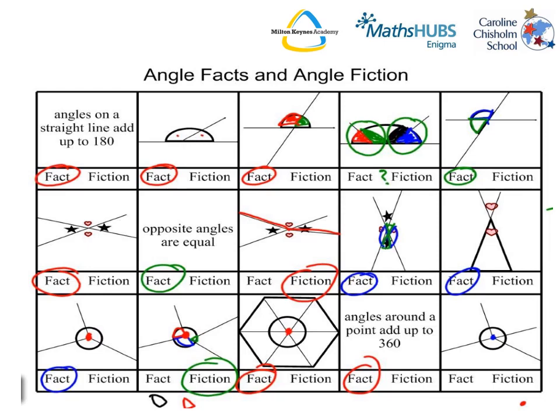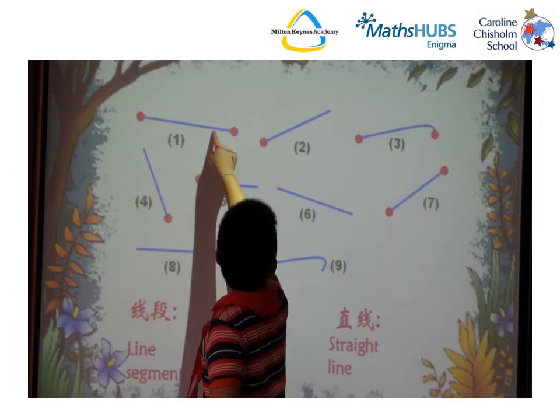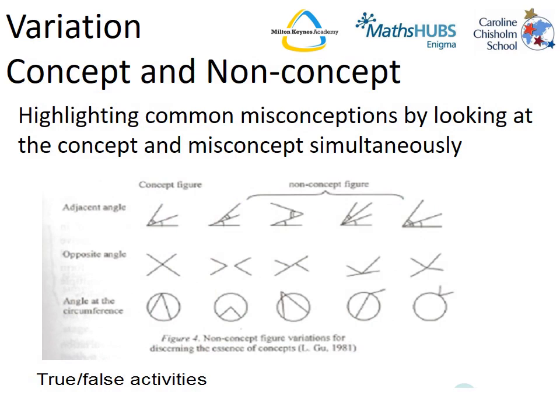The preciseness of language in Shanghai is so important and it's a thing that we tend to let slip a little bit. In Shanghai, from an early age, students are taught correct mathematical terminology and then are expected to use this in their lessons as they progress through the school. So here is concept and non-concept using line segments, lines and rays — terms that we don't tend to teach in the UK. Students are identifying what these things are and what these things are not. Concept and non-concept is a process of highlighting common misconceptions by looking at the concept and the misconcept simultaneously.